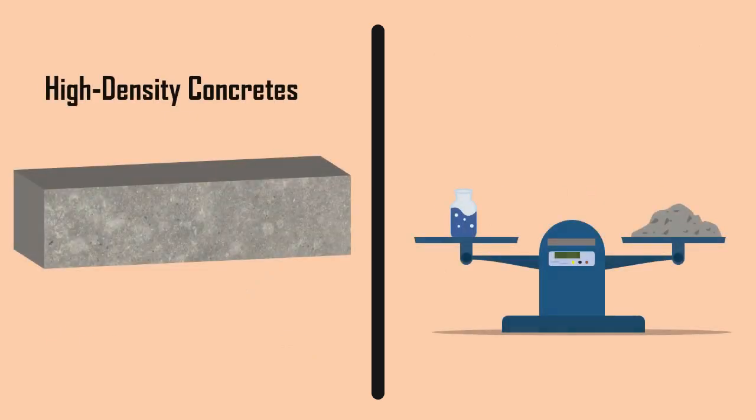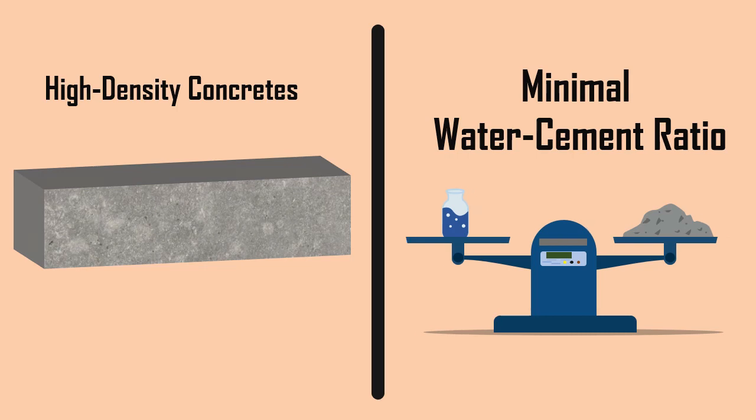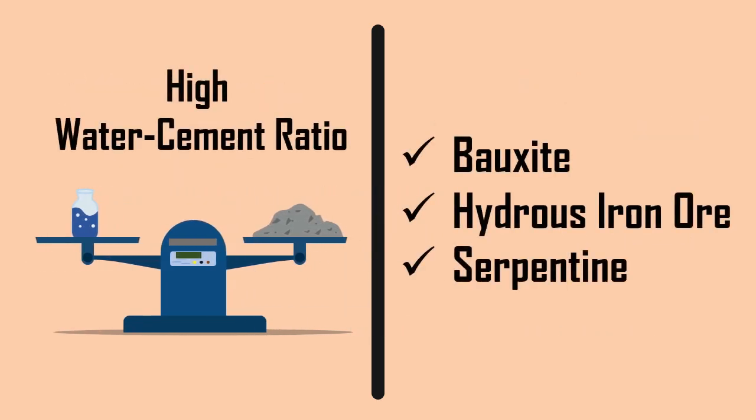Normally, high-density concrete uses minimal water-cement ratio. In cases where high fixed water content is required, minerals like bauxite, hydrous iron ore, or serpentine, which are slightly heavier than normal weight concrete, are used for preparing heavy density concrete.